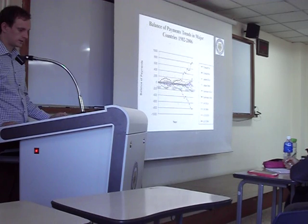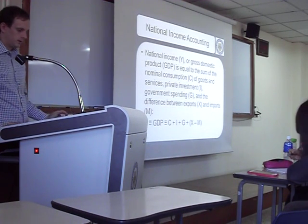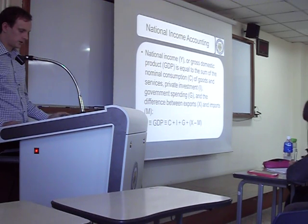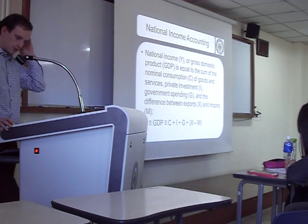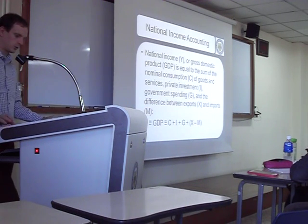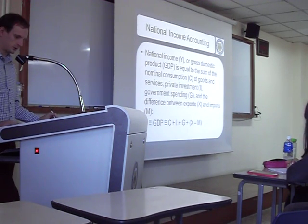Let's talk about national income accounting. Gross domestic product equals the sum of consumption of goods and services, private investments, government spending, and the difference between exports and imports. So GDP = C + I + G + (X - M).